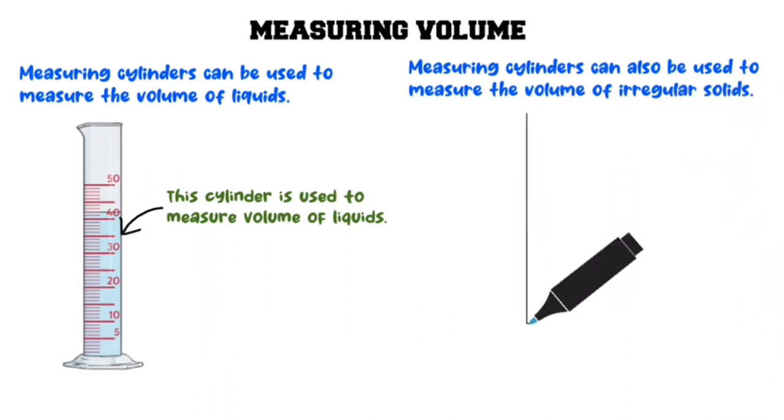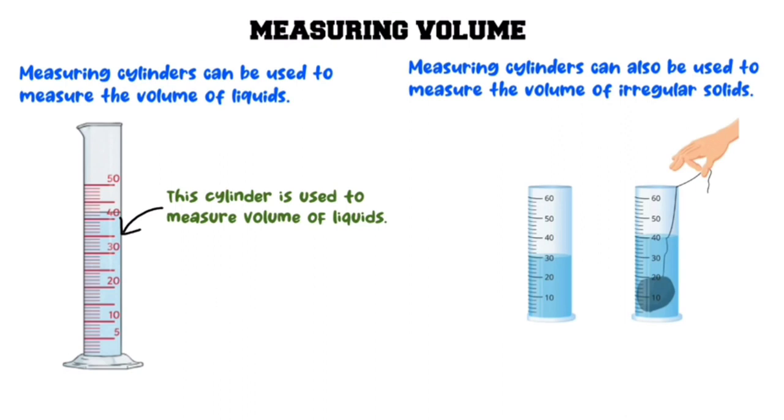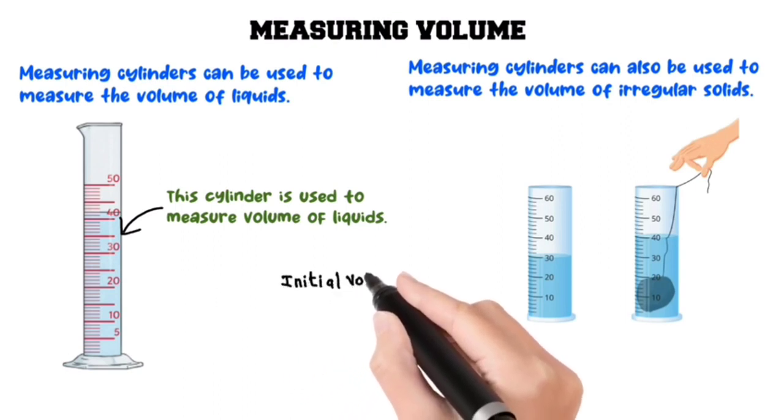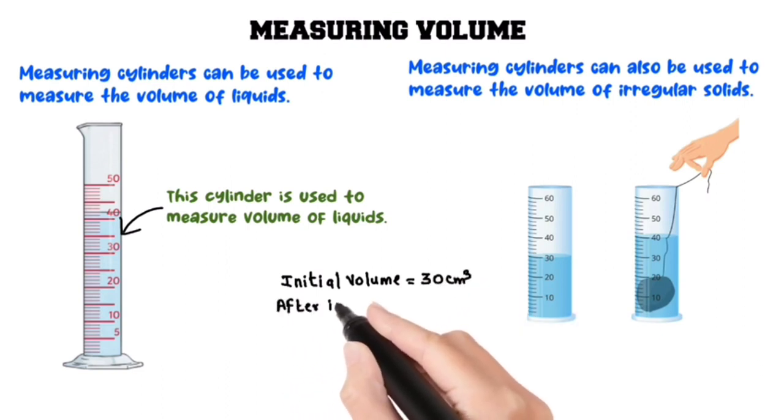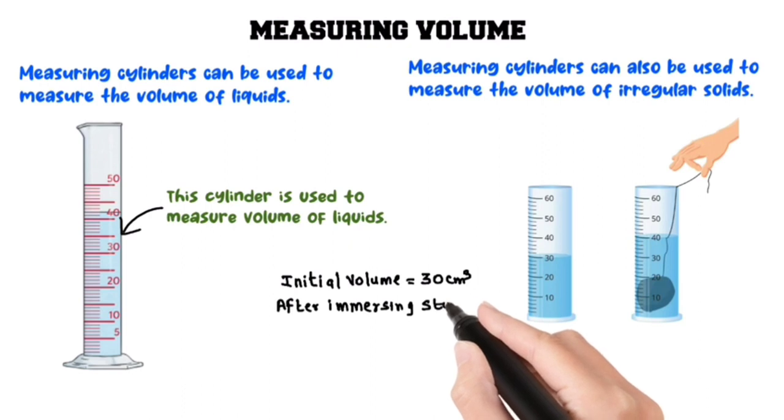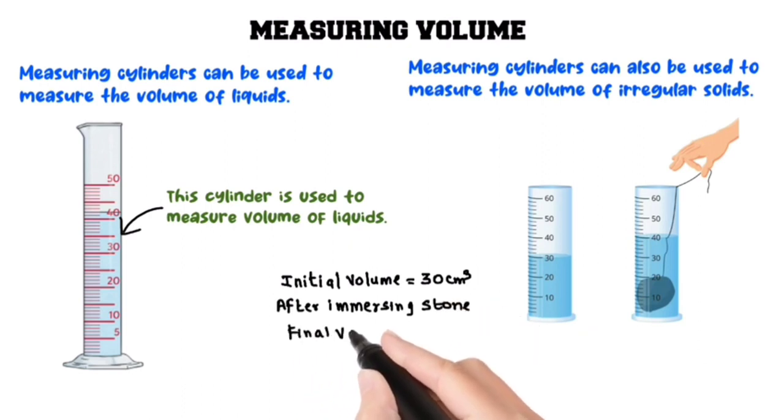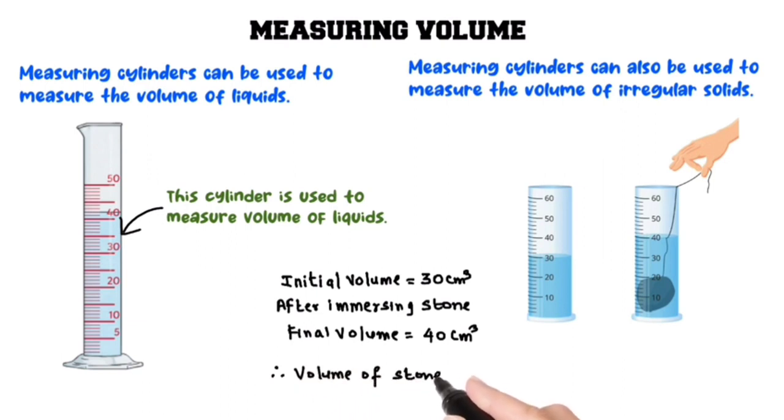Here, we will find the volume of an irregular solid. We see the initial volume is 30 centimeters cubed. After immersing the stone, the final volume is 40 centimeters cubed. Therefore, the volume of the stone is 40 minus 30 equals 10 centimeters cubed.